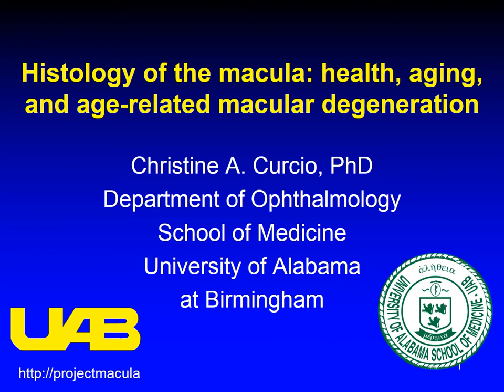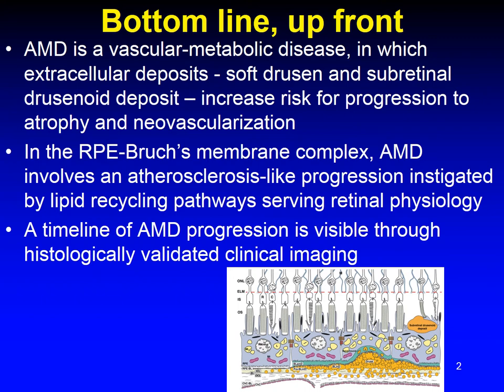I'm Christine Kershio, and my topic today is Histology of the Macula in Health, Aging, and in AMD. AMD is a vascular metabolic disease in which extracellular deposits, soft drusen and subretinal drusenoid deposit, increase risk for progression to atrophy and neovascularization. In the RPE-Bruch's membrane complex, AMD involves an atherosclerosis-like progression instigated by lipid recycling pathways serving retinal physiology. A timeline of AMD progression is visible through histologically validated clinical imaging.